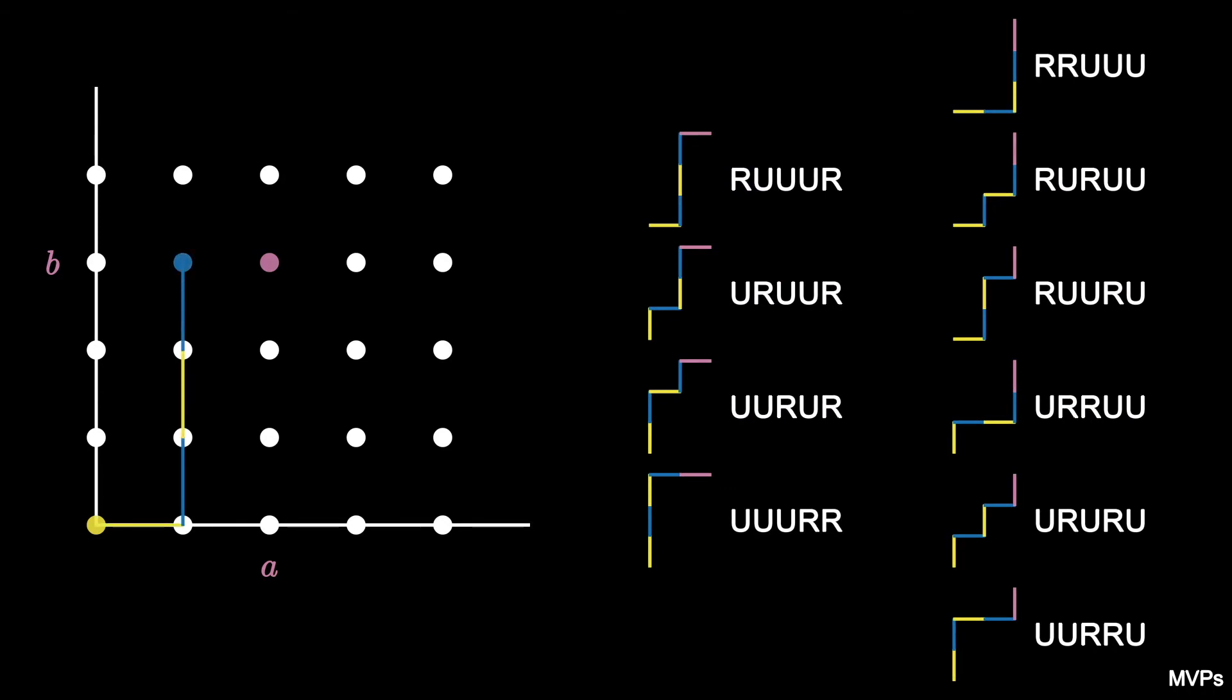Notice that all the paths ending in R must first pass through the point (a-1, b). Similarly, all the paths ending in an up step U must first pass through the point (a, b-1).